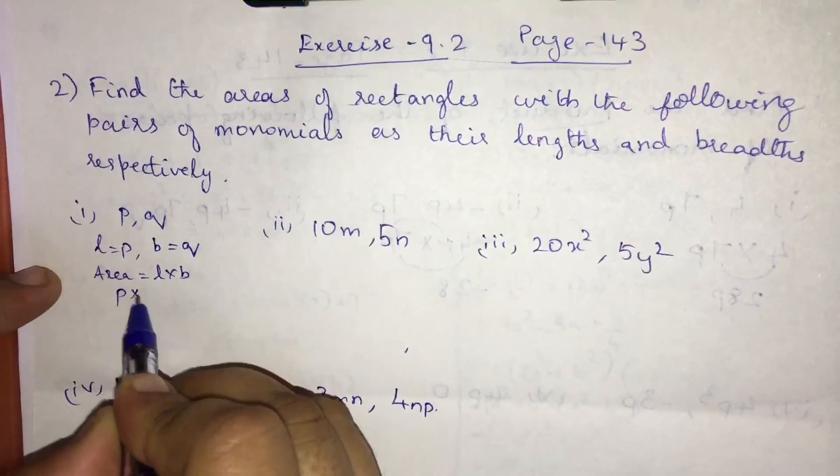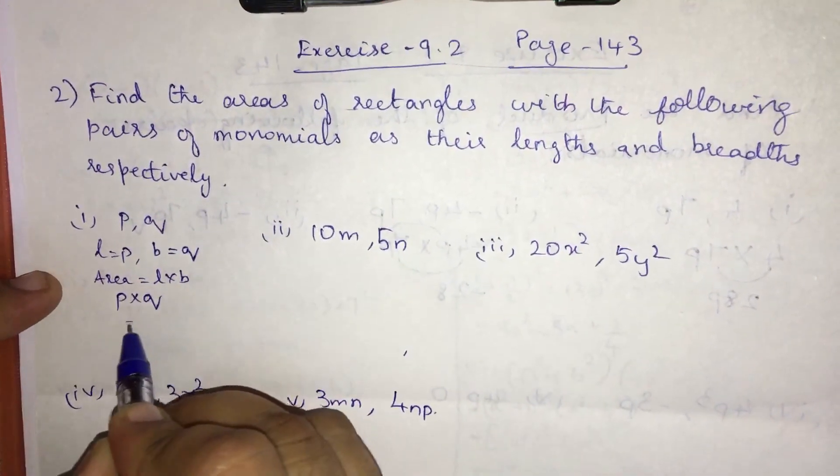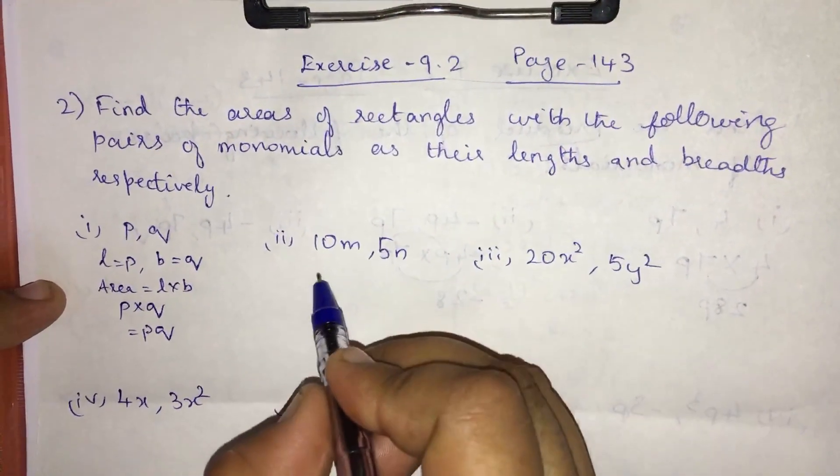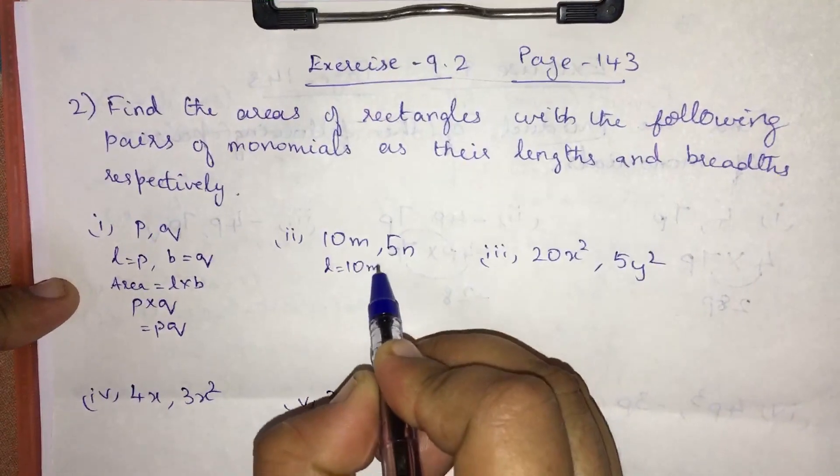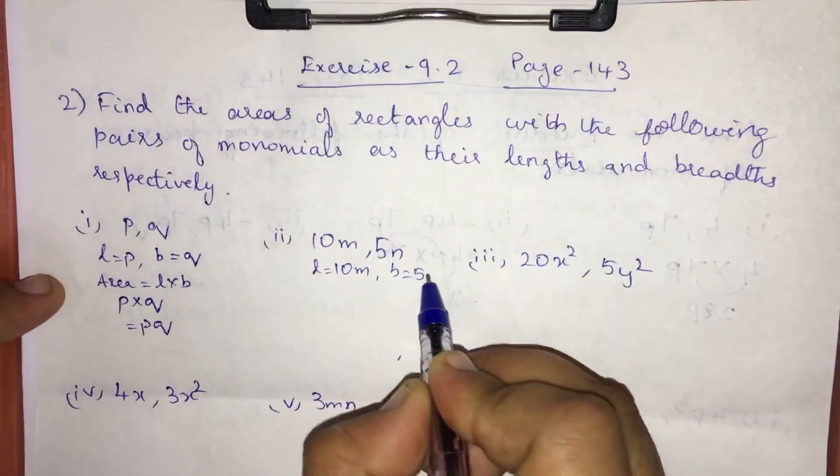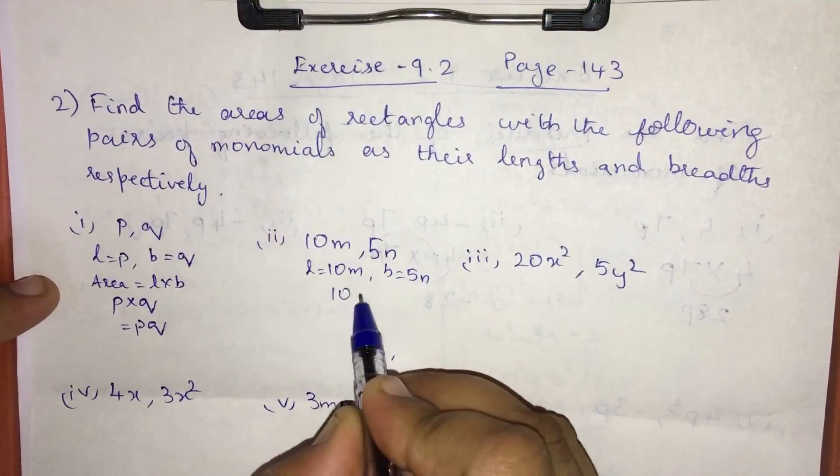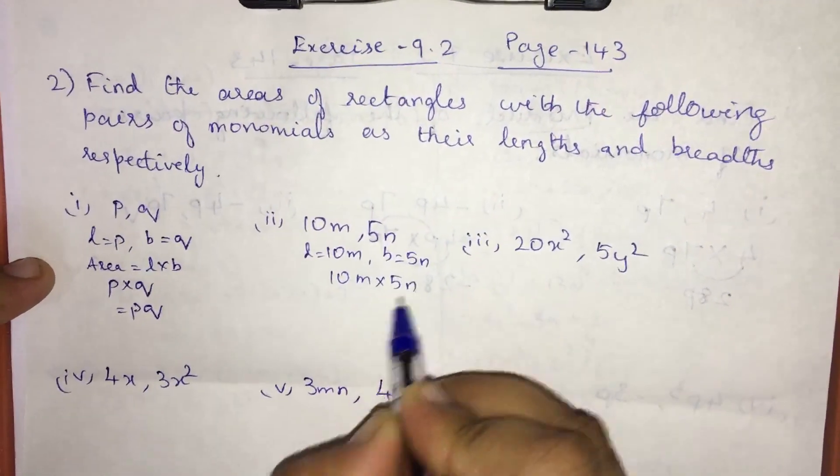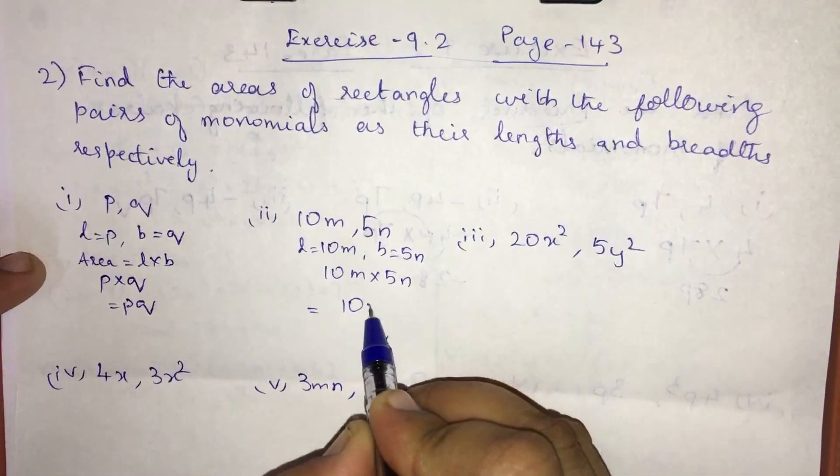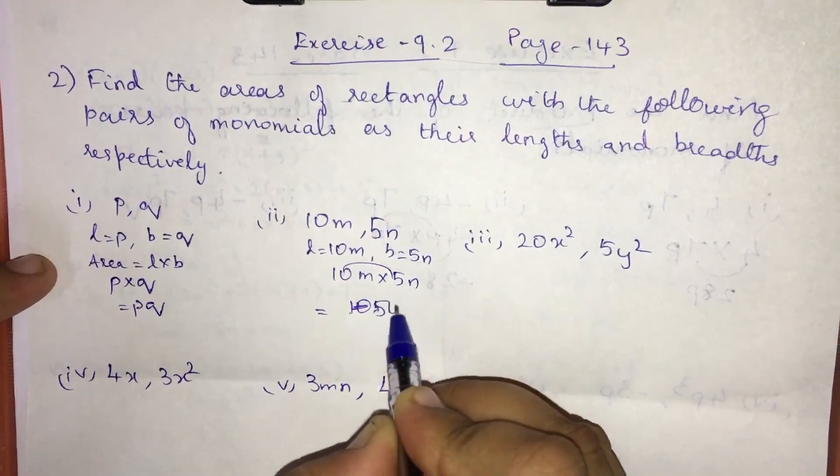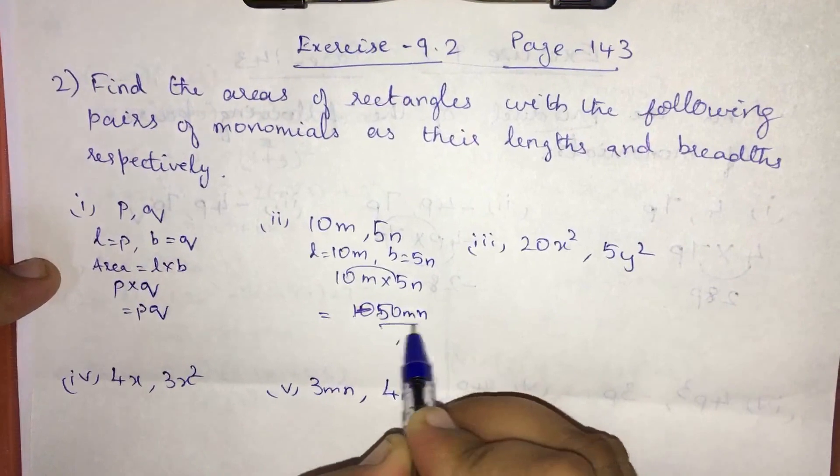Substituting, the answer is 10m into 5n. So it is 10m into 5n which is equal to 10 into 5, 50, 50mn. This is the answer.